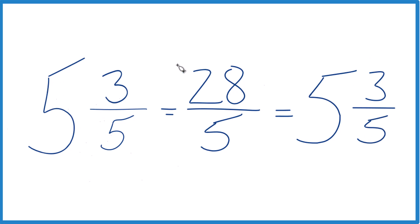And these two numbers here, they're equivalent. They have the same value. 28 fifths, that's our improper fraction, 5 and 3 fifths, the mixed number. Just two different representations of that value.